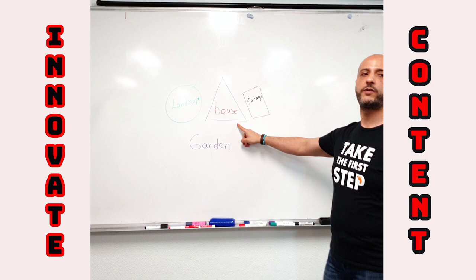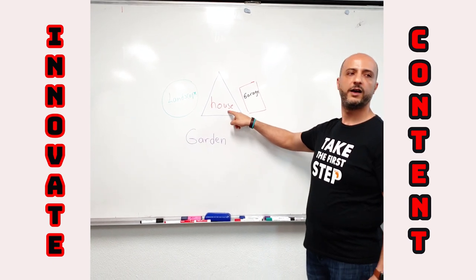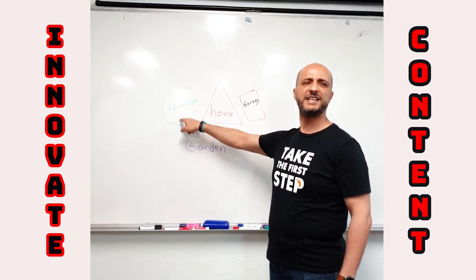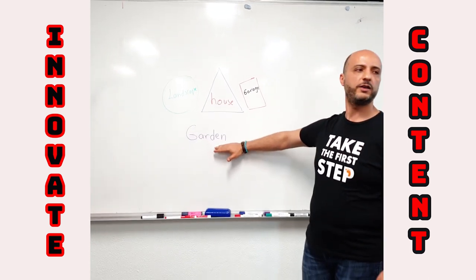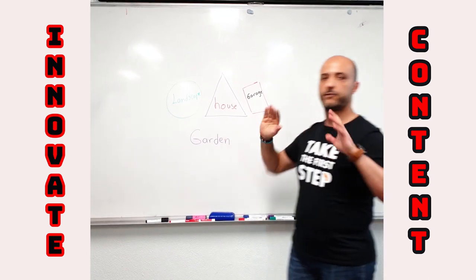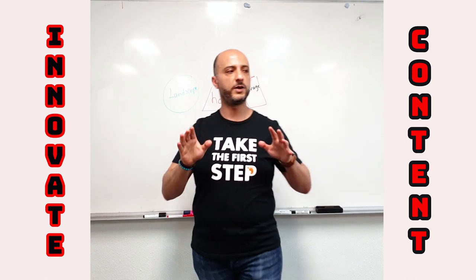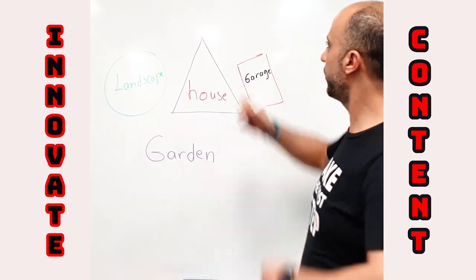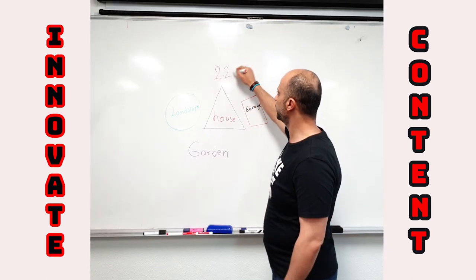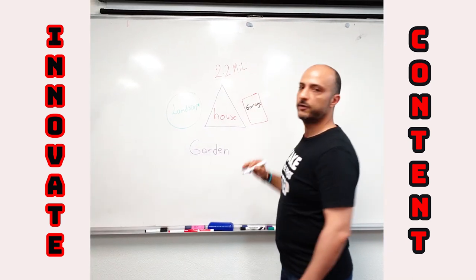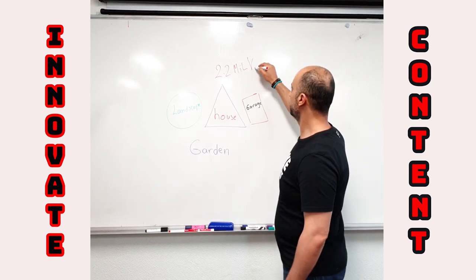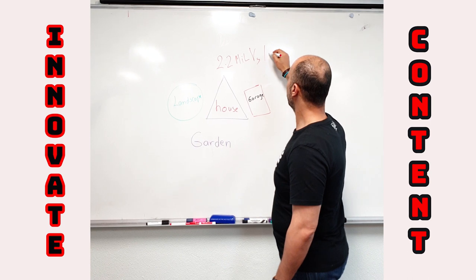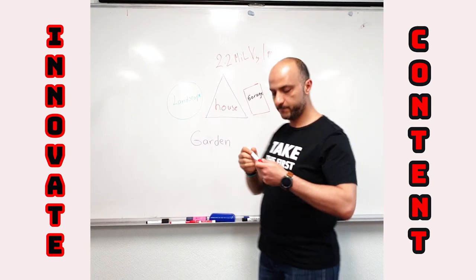Let's have a look at this illustration over here. We've got a house, we've got a garage, some kind of landscape with different shapes, and we've got a garden — front yard, backyard. What makes this house worth 2.2 million versus a house of the same space but worth only 1 million? Location.